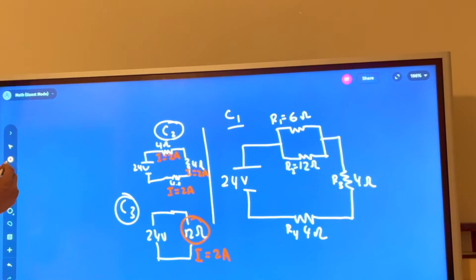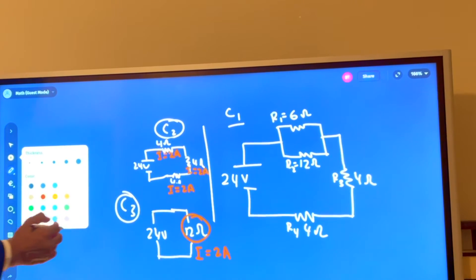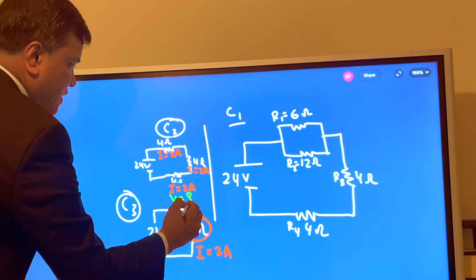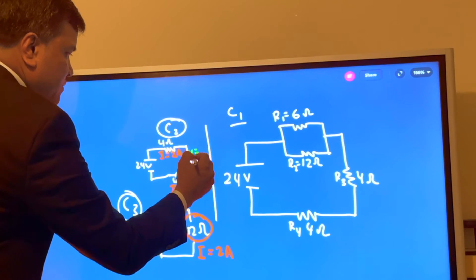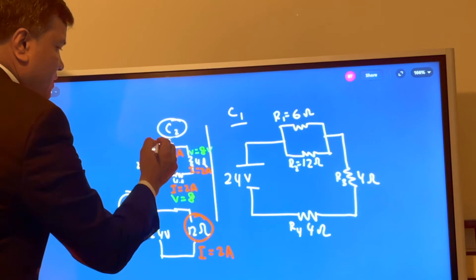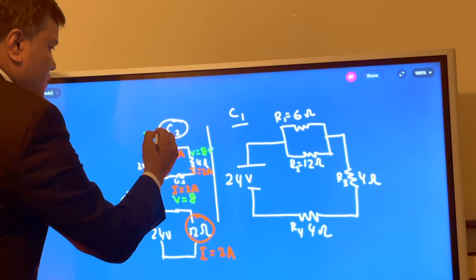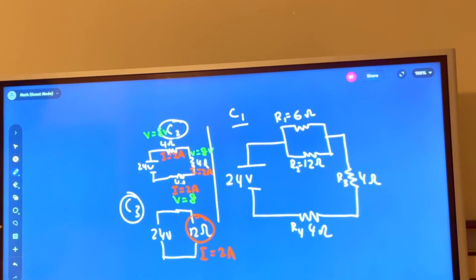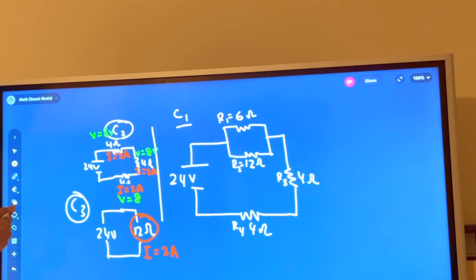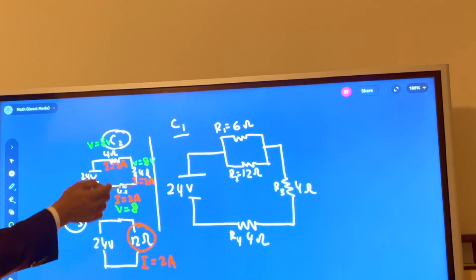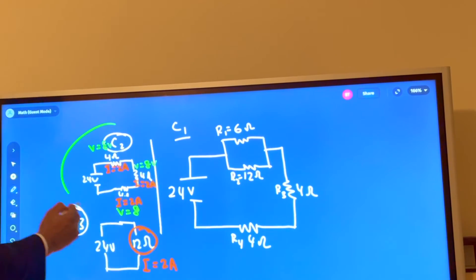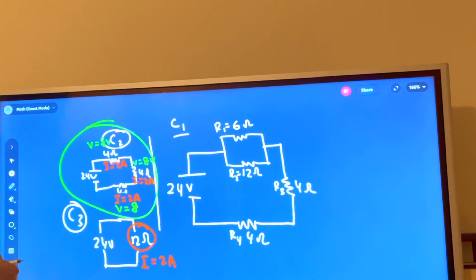So now we can easily find the voltage for each of them. So voltage would be four times two, eight volts for each. Now we know the voltage and current for each and every bulb at circuit two. Now we're going to take it to circuit one.